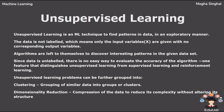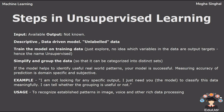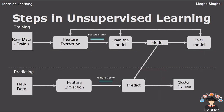In unsupervised learning, the data is not labeled, which means only the input variables are given with no corresponding output variables. Algorithms are left to themselves to discover interesting patterns in the given dataset. Based on similarity measures, the data is divided into clusters. The clusters are homogeneous within and heterogeneous from each other. We train the model on the training data and then simplify and group the data. If the model helps to identify useful real-world patterns, your model is successful. Measuring the accuracy of prediction is domain-specific and subjective.